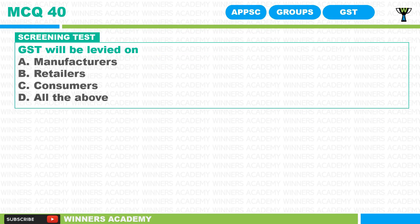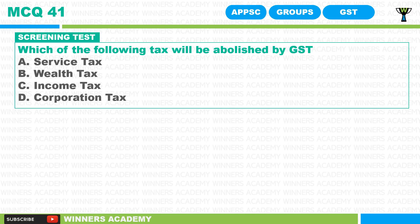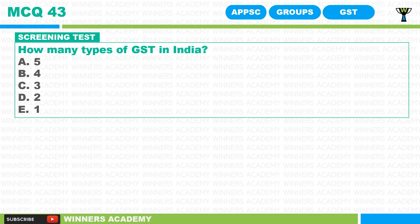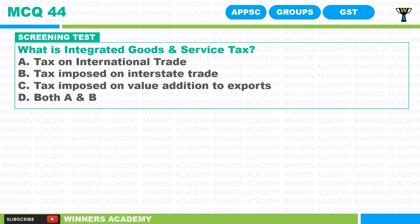MCQ 40: GST will be levied on — manufacturers, retailers, consumers, or all of the above? MCQ 41: Which of the following tax will be abolished by GST? GST comes under which amendment bill? This is an easy one. How many types of GST are there in India? This question has been repeated multiple times, but just to reinforce understanding. What is integrated goods and service tax?